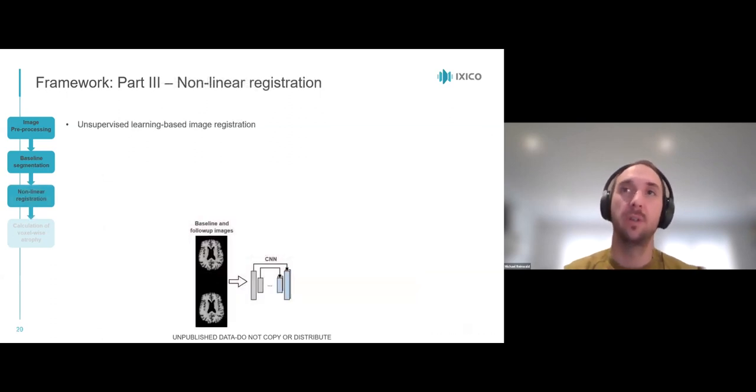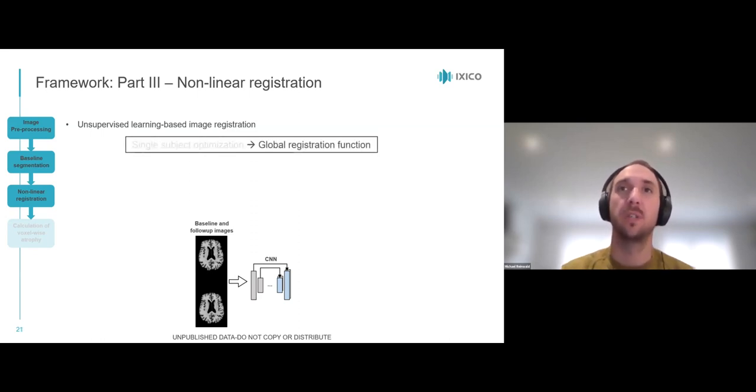Part three, the non-linear registration is the second AI-powered part of the framework. Here we use an unsupervised learning-based image registration, which means that we don't run a single-subject optimization, but make use of a global registration function inside a convolutional neural network, or a CNN, that registers the two images non-linearly in seconds.